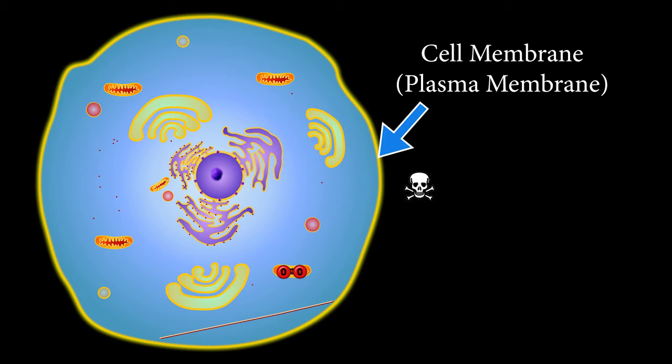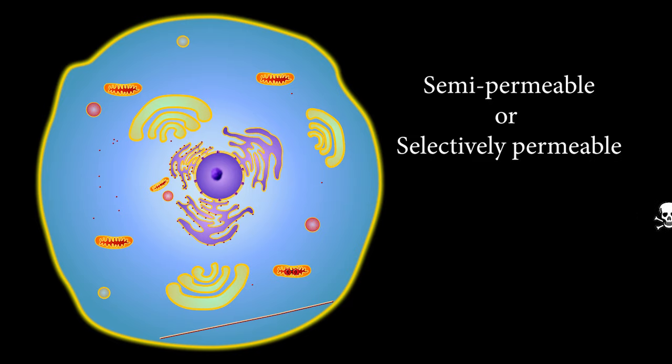Because the membrane lets some things through but not others, we say that the membrane is semi-permeable, or selectively permeable.